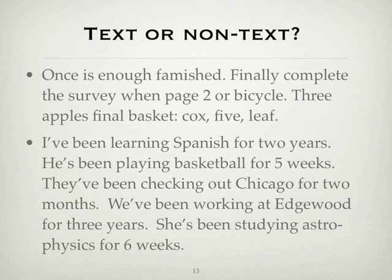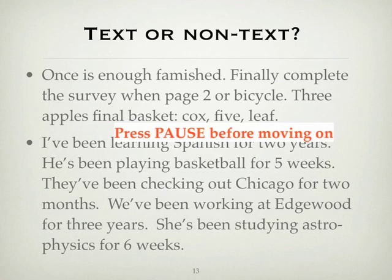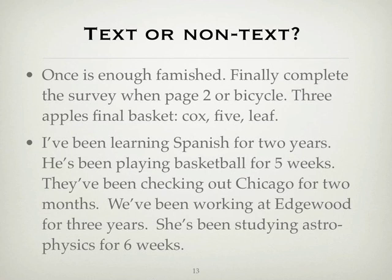Read these two texts and ask yourself what makes for coherence or textuality. The first one — 'once is enough famished, finally complete the survey when page two or bicycle three apples final basket cocks five leaf' — seems to be just grammatically incorrect. We can hardly make sense of each clause, let alone how they hang together. One obvious thing we can say, then, is that a text must be grammatically coherent.